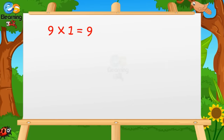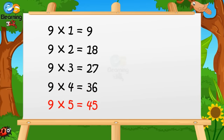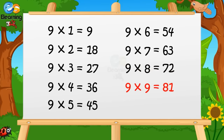9 ones are 9. 9 twos are 18. 9 threes are 27. 9 fours are 36. 9 fives are 45. 9 sixes are 54. 9 sevens are 63. 9 eights are 72. 9 nines are 81. 9 tens are 90.